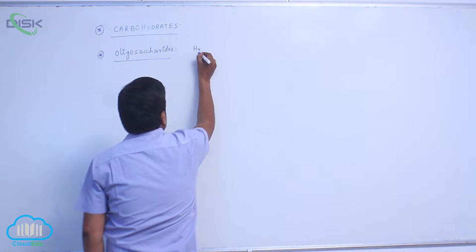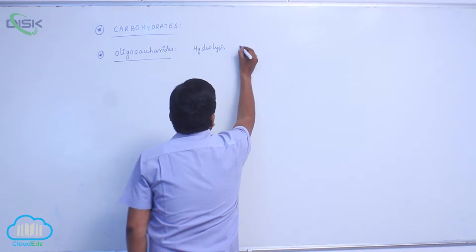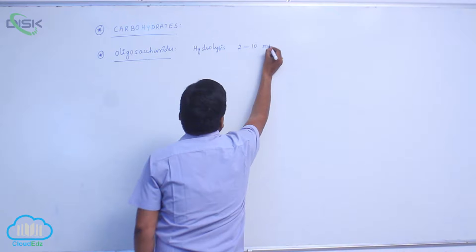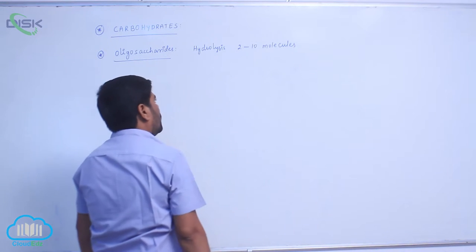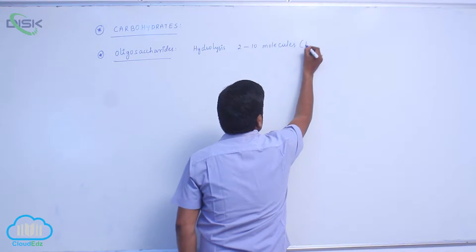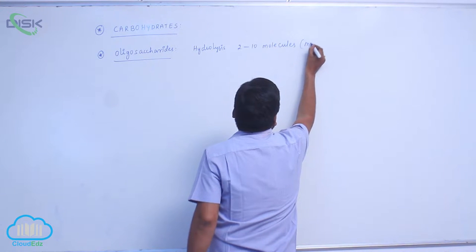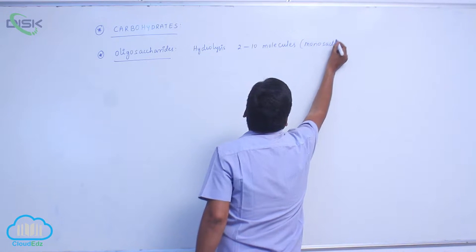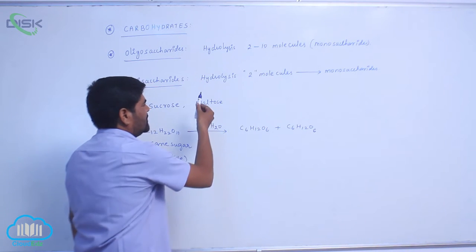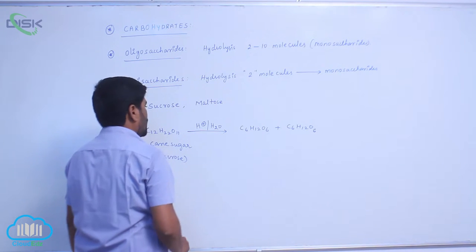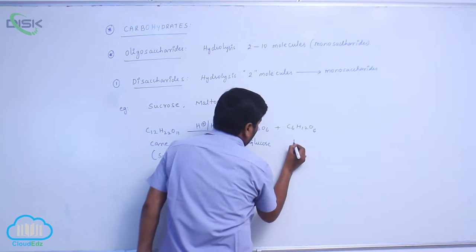Oligosaccharides is a carbohydrate that on hydrolysis gives 2 to 10 monosaccharides. A disaccharide gives 2 molecules of monosaccharides when hydrolyzed. For example, cane sugar sucrose on hydrolysis gives one unit of glucose and one unit of fructose.